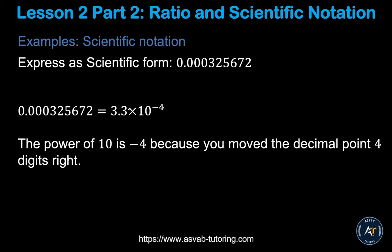For a decimal number, the process is the same — find the first nonzero digit and place the decimal after it. In this example the first digit is 3, so you write 3.3. If the number rounds to approximately 3.2, that's also fine depending on answer options. For a decimal number you count from right to left instead of left to right. Counting 1, 2, 3, 4 places to the left, you use a negative exponent: 10 to the power of negative 4.